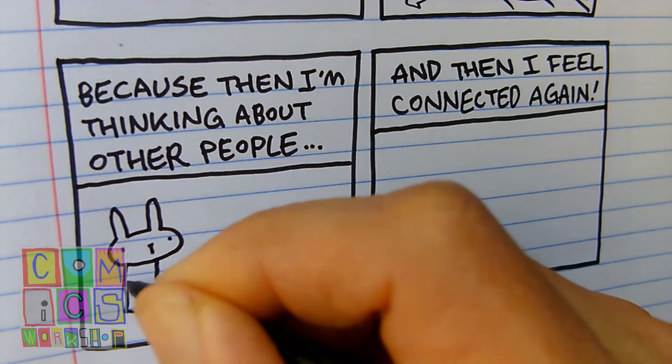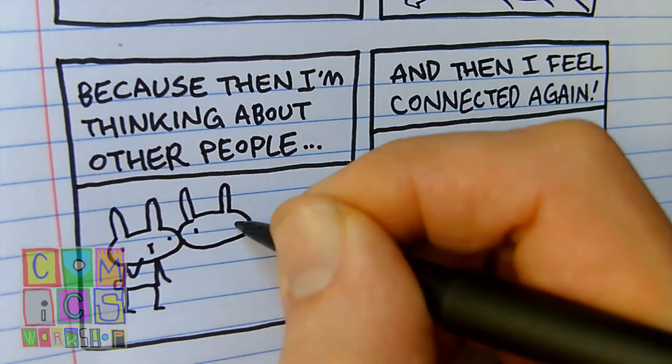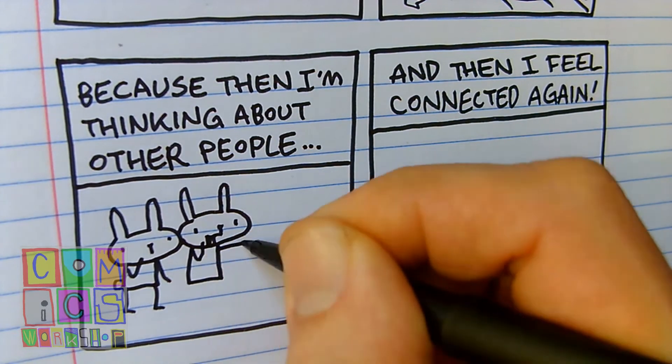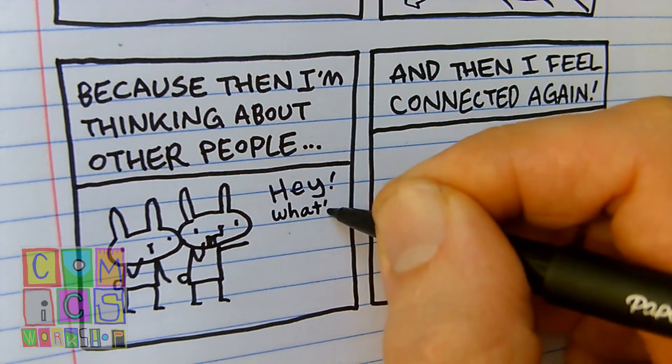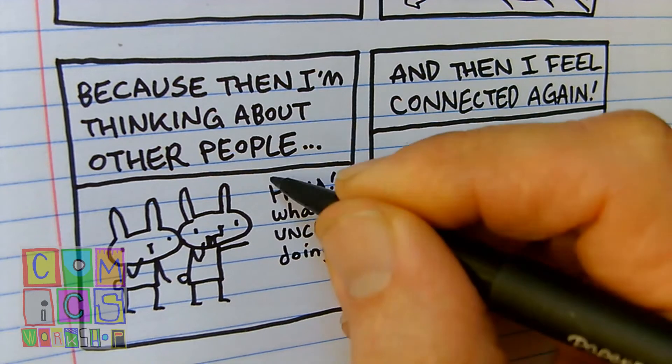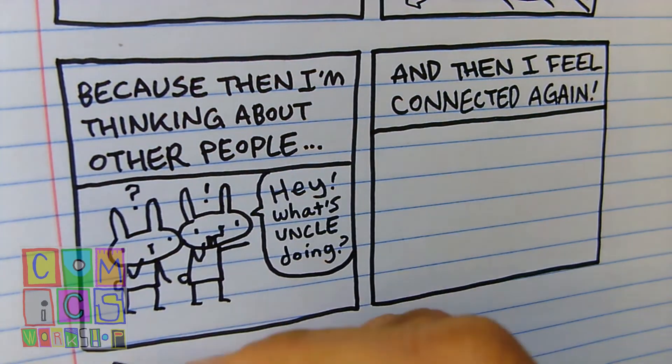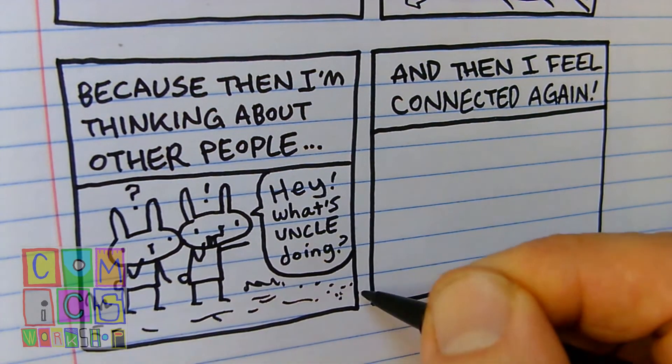All right, panel three. Now here are the kids from next door, my niece and nephew, and they see what I'm doing and they come over and they say, hey, what's uncle doing? We'll put a word bubble around that, draw some curiosity, some little stick details.